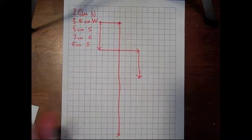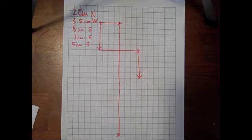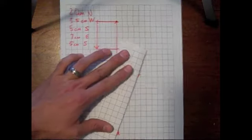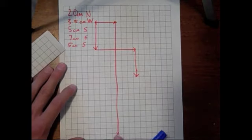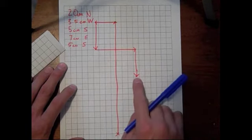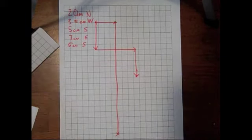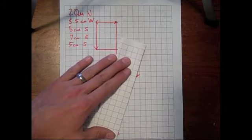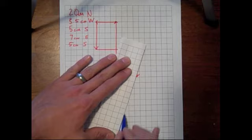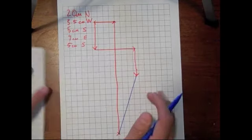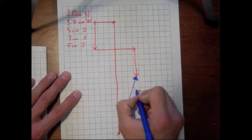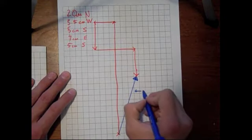Now once we have that drawn, we need to put in what's called our resultant vector. So I'm going to do that one in blue. We'll take a straight edge, and we're going to draw a line connecting the very beginning of our first vector to the very end of our last vector. So we draw that in, and we're going to draw an arrow showing which way that points. And this we're going to call our resultant.